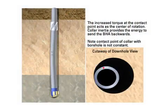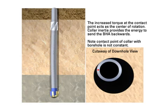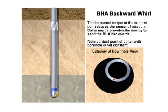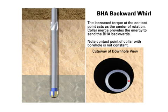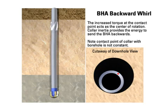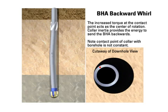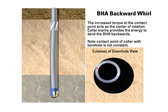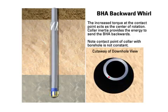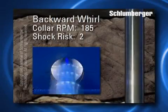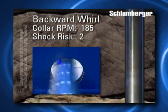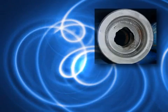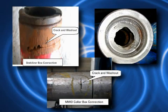Backward whirl is very similar to forward whirl, except friction between the formation and BHA is greater. This increased friction results in increased torque on the BHA, which causes the BHA to rotate in the opposite direction of the rotation of the drill string. If whirling is backwards, then the collar connections can flex and fatigue at a very fast rate, resulting in accelerated fatigue cracking, washouts, and possible twist-offs.